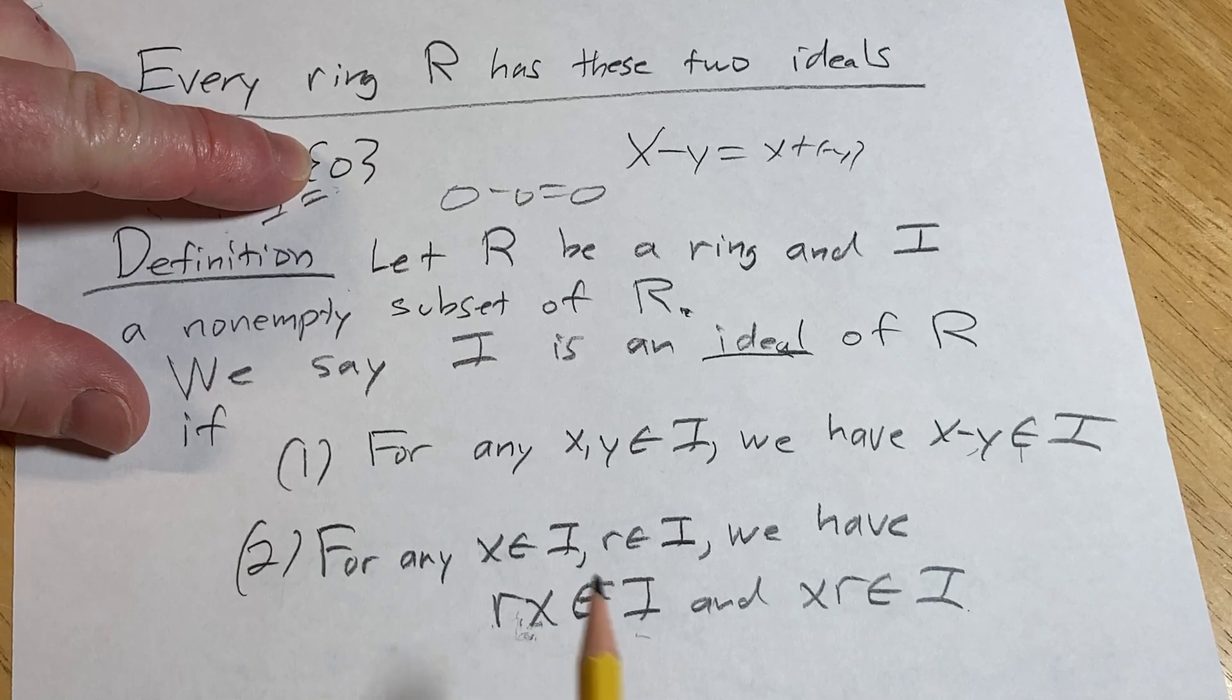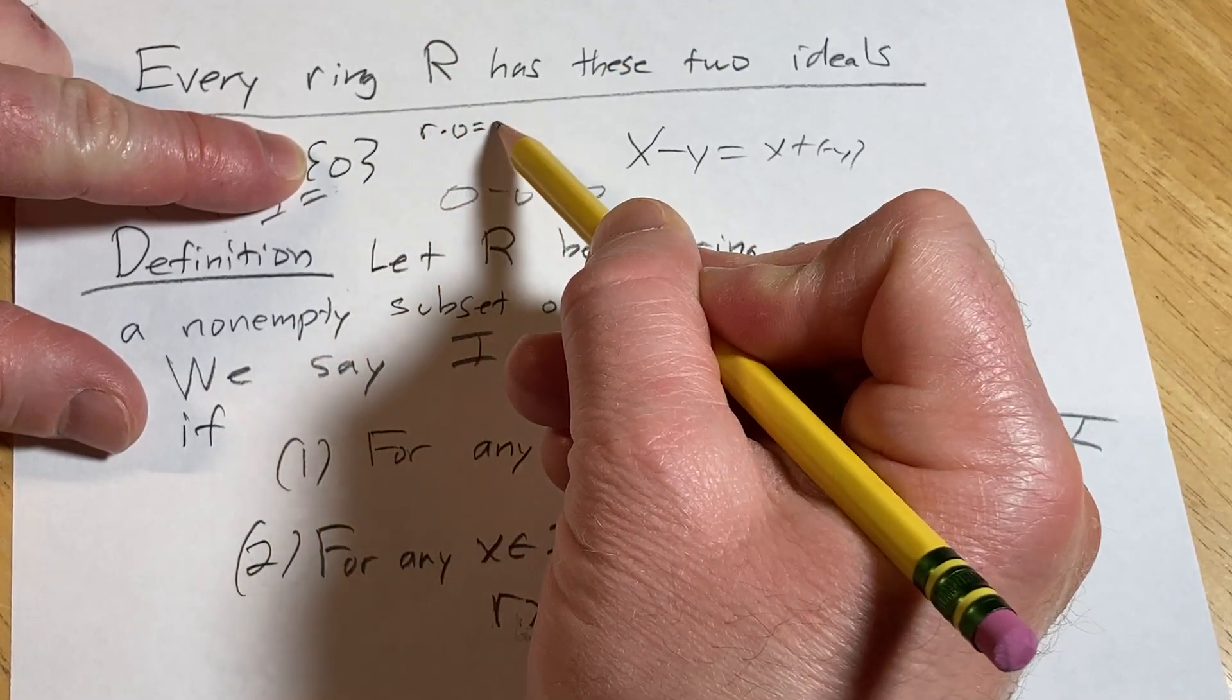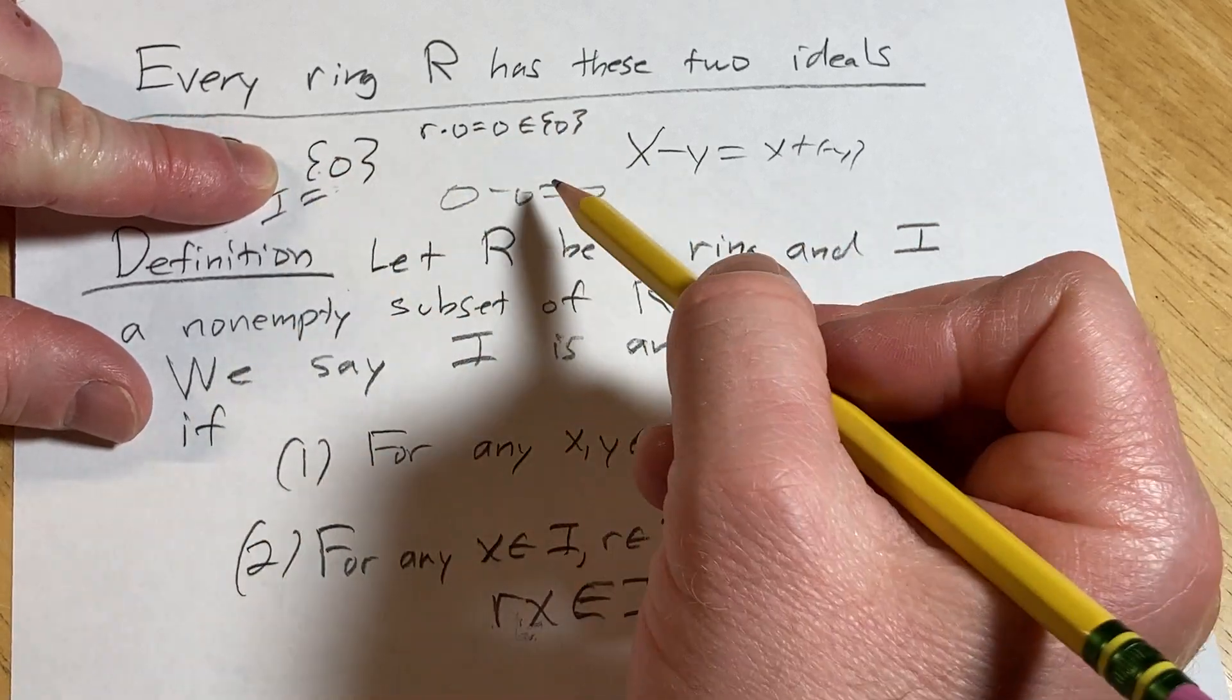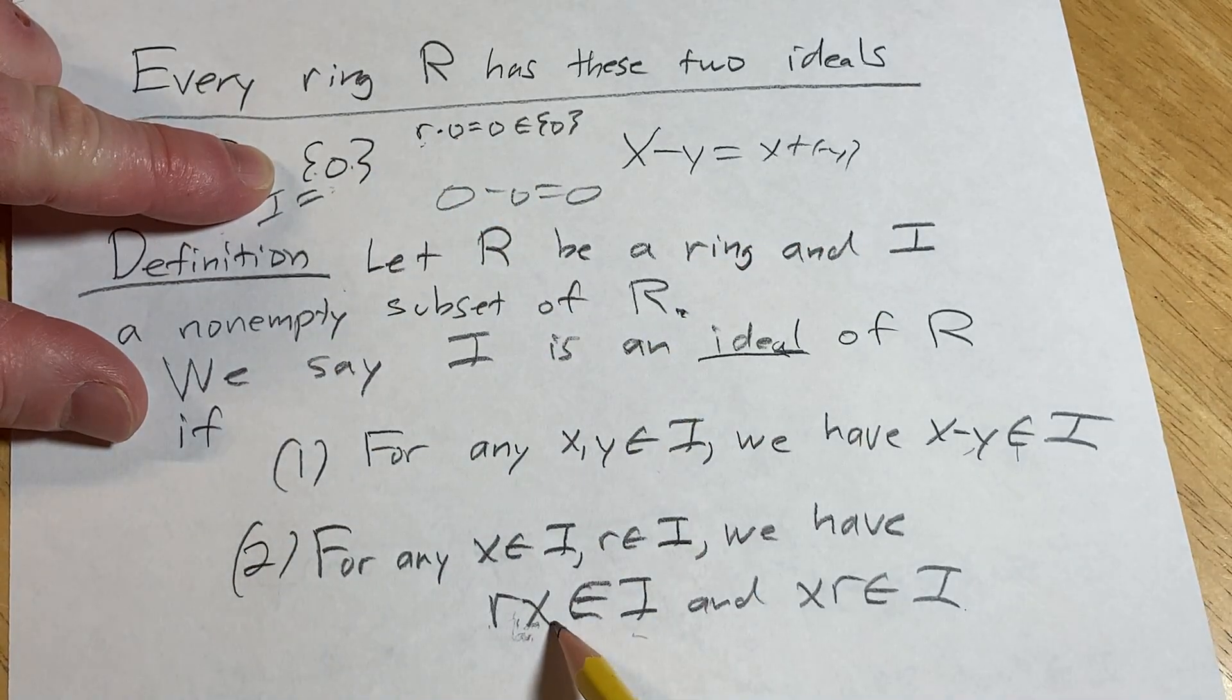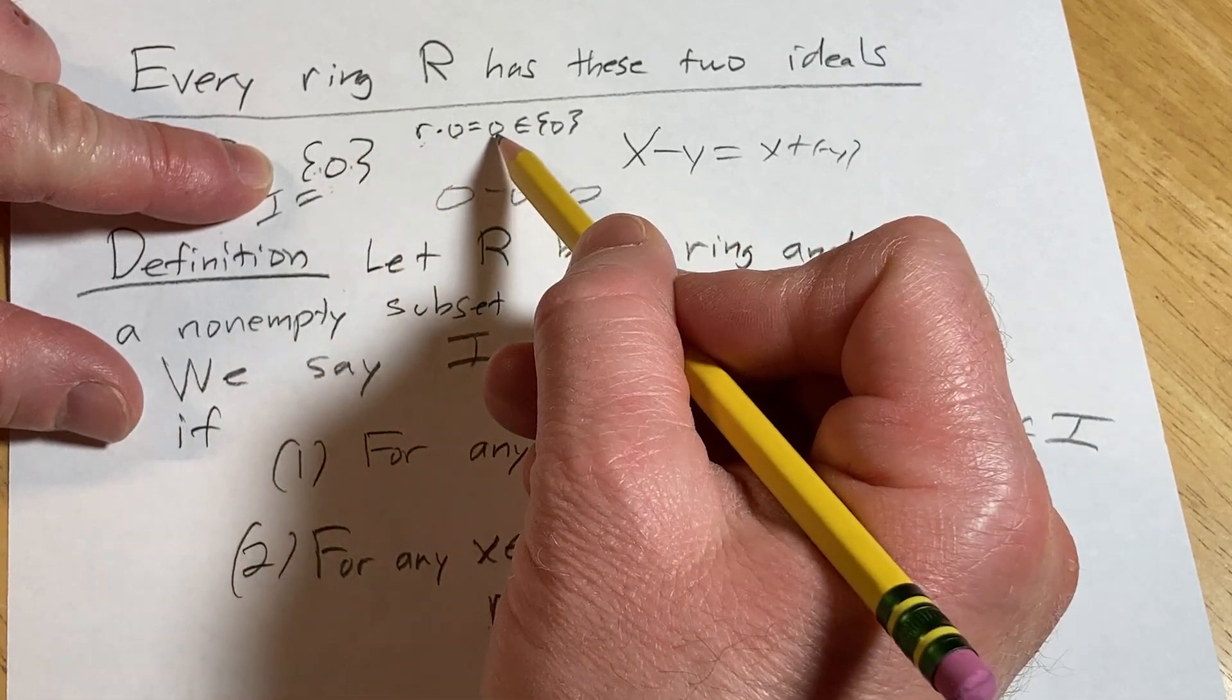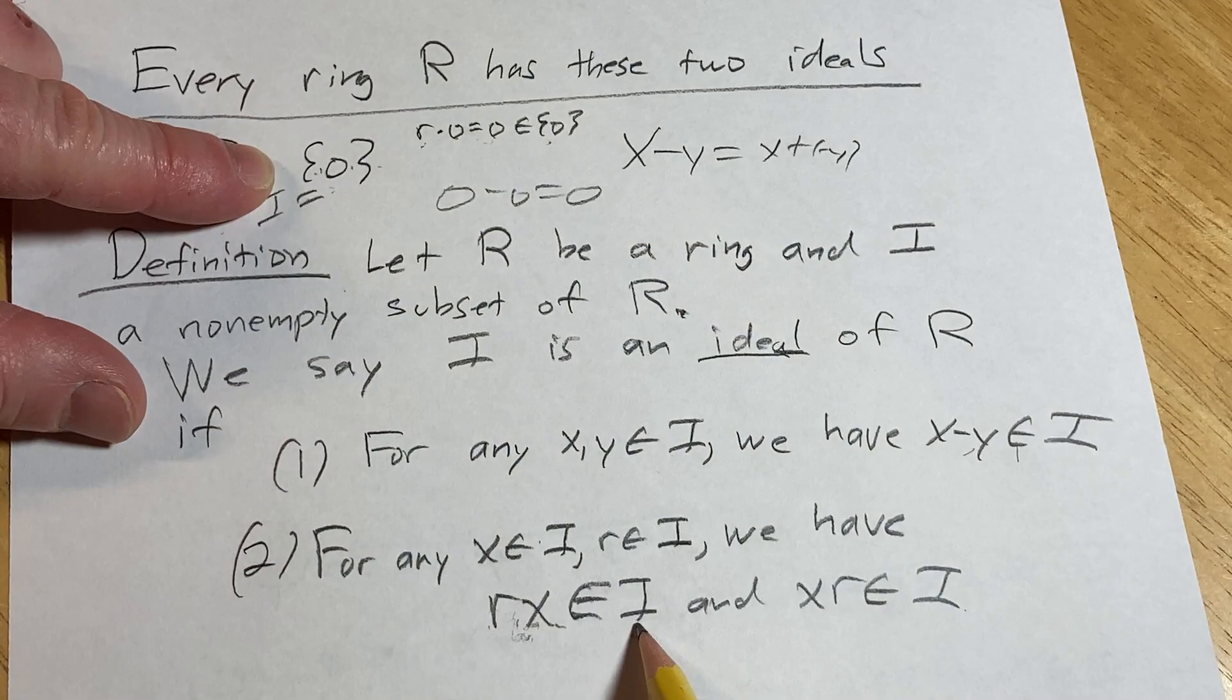For this one, well, if you take any element in R, call it little r, multiply it by zero, what are you going to get? You're going to get zero. Oh, and look at that. Where does that live? That lives in this set, right? So you take any r in big R, multiply it by this little guy, because that's the only thing, that's the only x that's in your I, right? Because it's a singleton set. It means it has one thing in it only. And you're just going to get zero, but that's in there. So it's good.